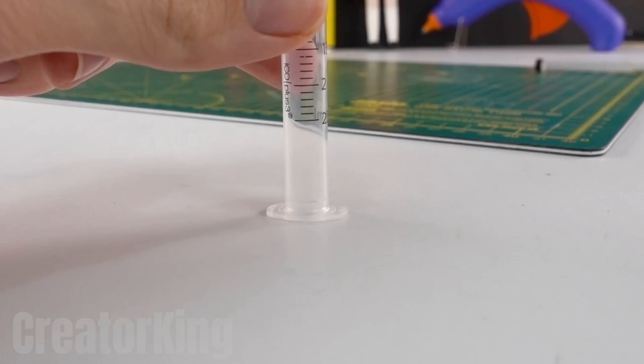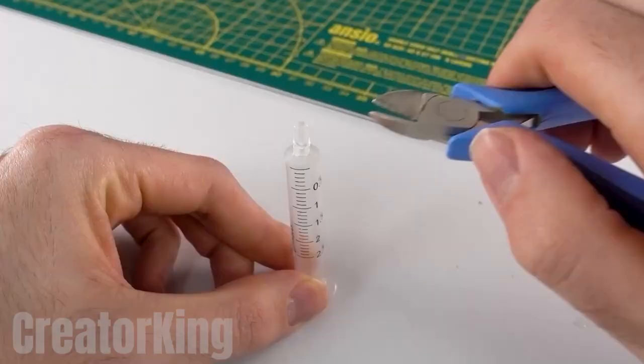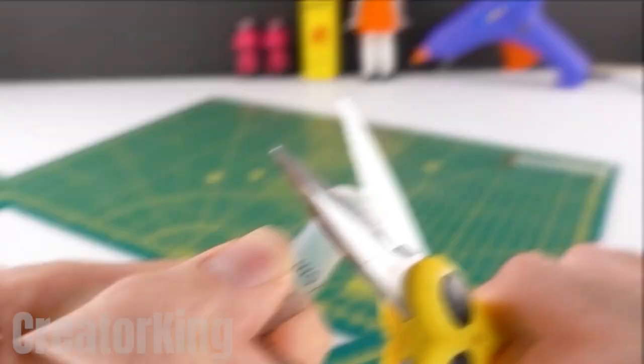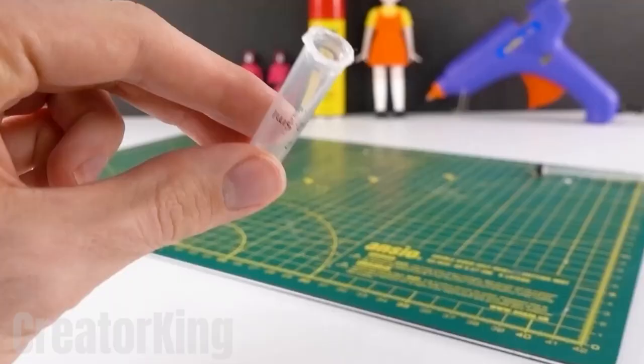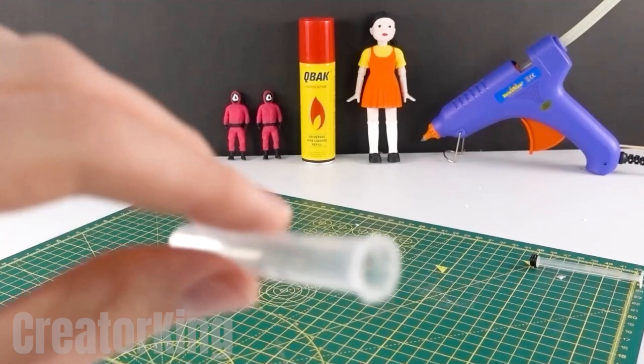Once you have removed the support from the thin syringe, cut off the tip with a pair of pliers. Cut the tabs at the bottom of the piece until it looks like this and repeat the previous steps with the second syringe.